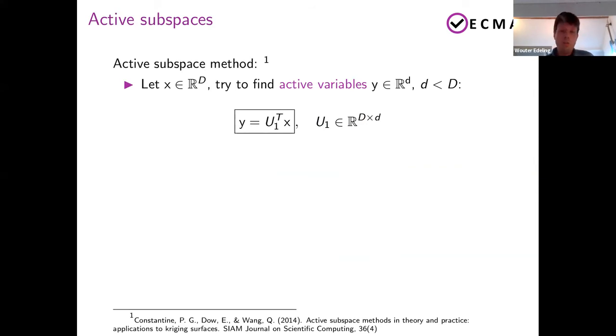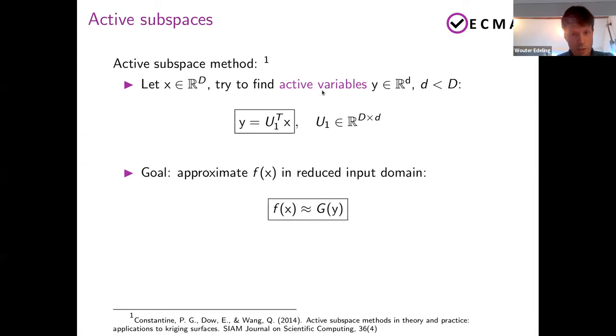Now, in order to do that, you want to find the active variables, which are called y. And by the way, if you want to read about active subspaces, it was developed by Paul Constantine back in 2014. And the goal here is basically to find this matrix U1 here, right? This dimension D times, or capital D times small d, where capital D is the number of inputs and small d is hopefully a lot less, right, in the number of active variables. And so it's a linear projection. And if you're able to find that, then the next step would be to make a surrogate model of your code. I'm calling it G here, but then in the reduced input domain.